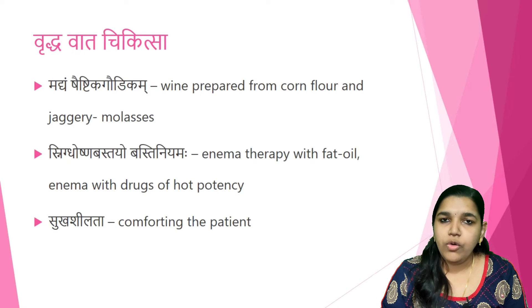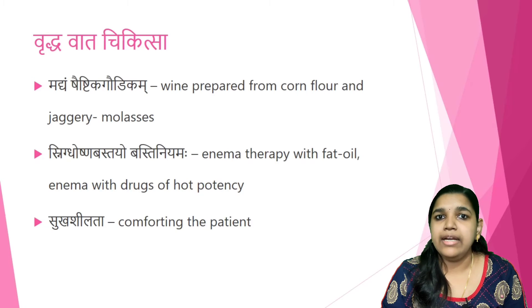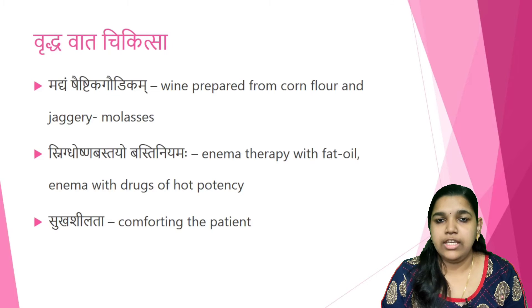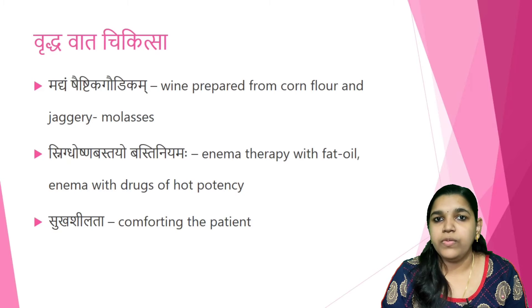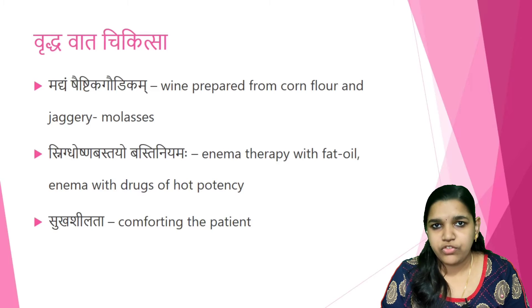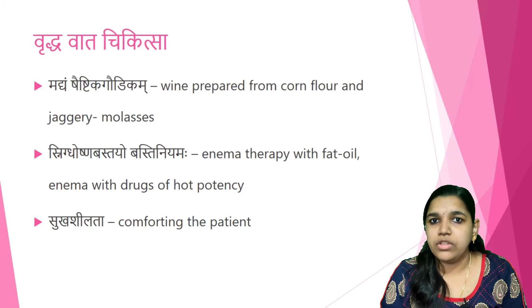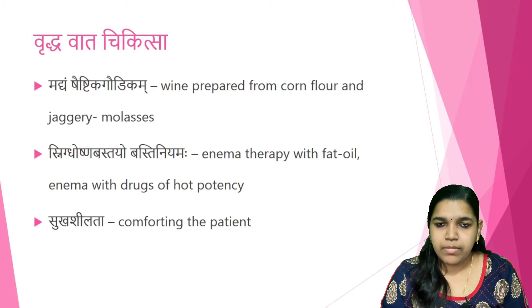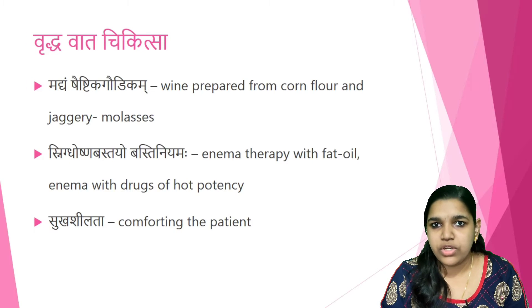Snigtha Ushna Bastayo Basti Niyamaha — as mentioned in the first chapter, the Shodhana karma of choice for Vata Vrithi is Basti. Basti karma should be administered as per the Basti Niyamaha. There are different types: Anuvasana Basti, Asthapana Basti, and Uttara Basti. Based on the condition, the proper Basti karma with proper regimen should be adopted.